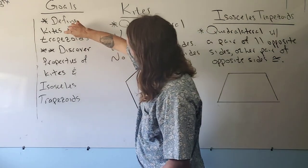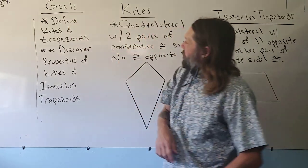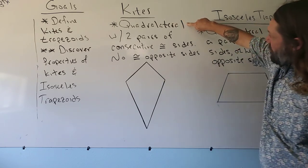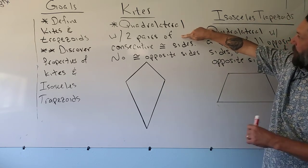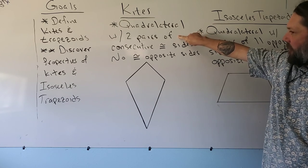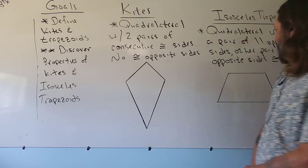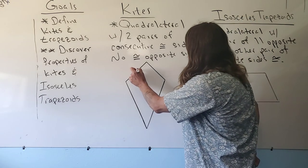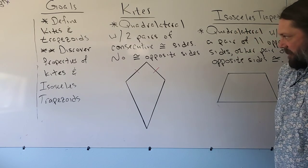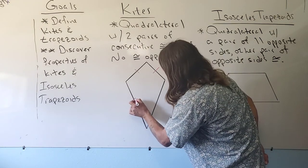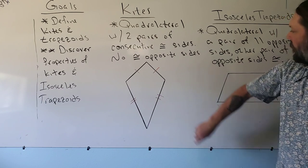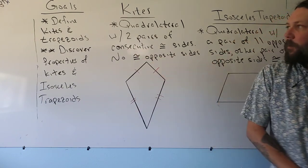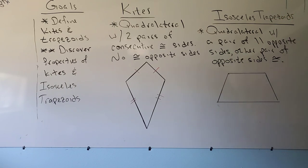I'm going to start off by defining a kite, and then we're going to discover properties of this kite. A kite is a quadrilateral — a four-sided shape — with two pairs of consecutive congruent sides, and no congruent opposite sides. So these two sides would be congruent because they're consecutive, and these two sides would be congruent because they're consecutive. No opposite sides are congruent — if they were, we would have a parallelogram.